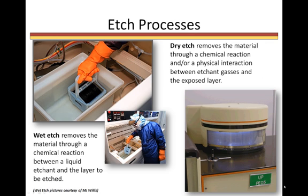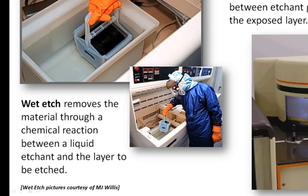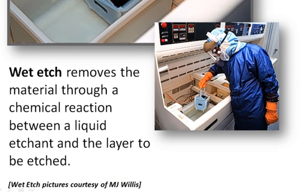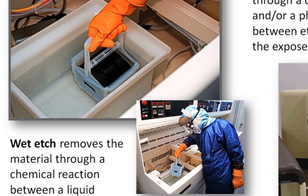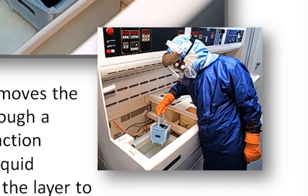Etching is accomplished through either a wet or dry technique. Wet etching removes material through a chemical reaction between a liquid etchant and the layer to be etched. Wet etching usually takes place at a wet bench with proper exhaust because many etchants are very caustic and emit vapors that must be controlled. Wet etch processes also require that acid gear be worn.